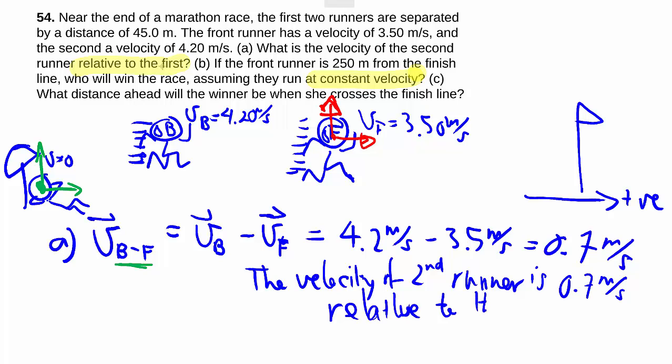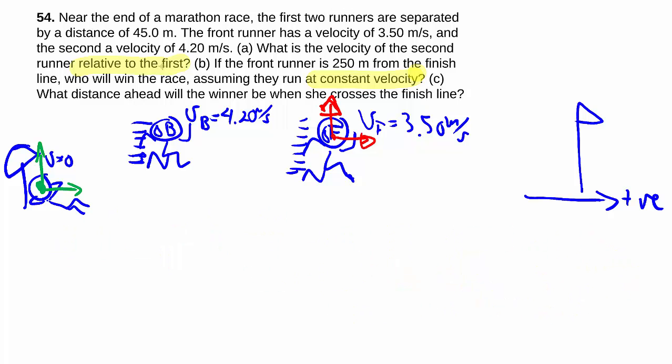So that's a little bit about relative velocity. On to part B, they give us some additional information now. The front runner is 250 meters from the finish line, and then the back runner is 45 meters behind the front runner to begin with. So this is my t equals 0 kind of picture.